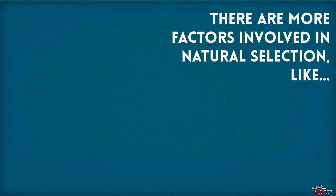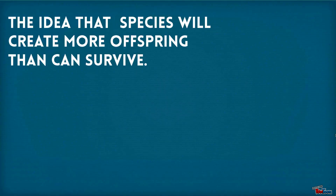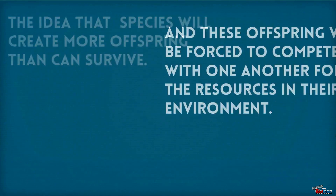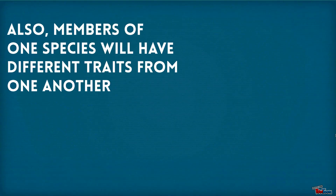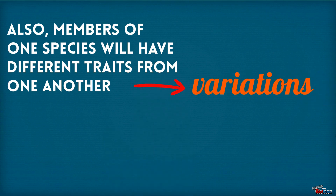There are more factors involved in natural selection, like the idea that species will create more offspring than can actually survive. These offspring will be forced to compete with one another for the resources in their environment. Also, members of one species will have different traits from one another. This is called variation.